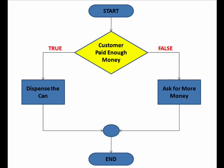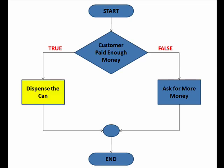Let's assume we paid enough money to get our soda. At that point, we would follow the branch labeled TRUE to the next step in our logic. That next step is for the machine to dispense the can. The decision has been made and our logic comes to a conclusion.